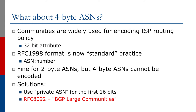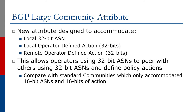The solution over recent years has been to use a private AS number for the first 16 bits. More recently, RFC 8092 has defined BGP large communities, standardized in early 2017. This is a new BGP attribute designed to deal with the case where most operators now have four-byte AS numbers. The BGP large community attribute accommodates a local 32-bit AS number, a local operator-defined action of up to 32 bits, and a remote operator-defined action also 32 bits — allowing operators using 32-bit AS numbers to peer with others and define policy actions. This is much superior to the original community definition, which only accommodated 16 bits of ASN and 16 bits of action.